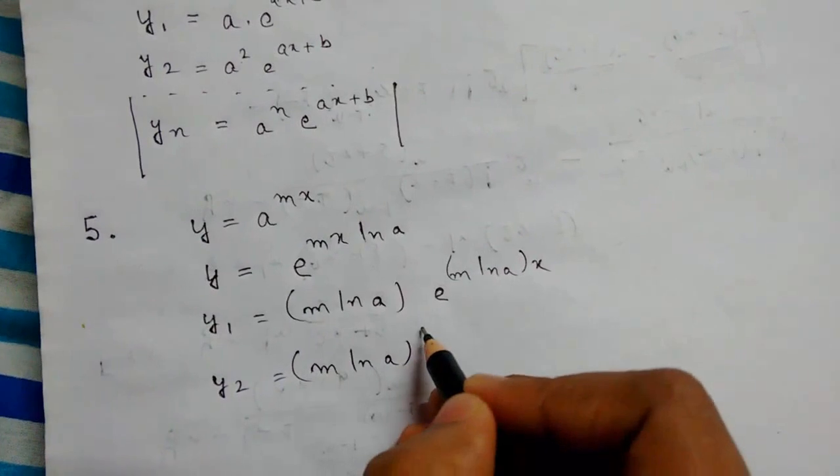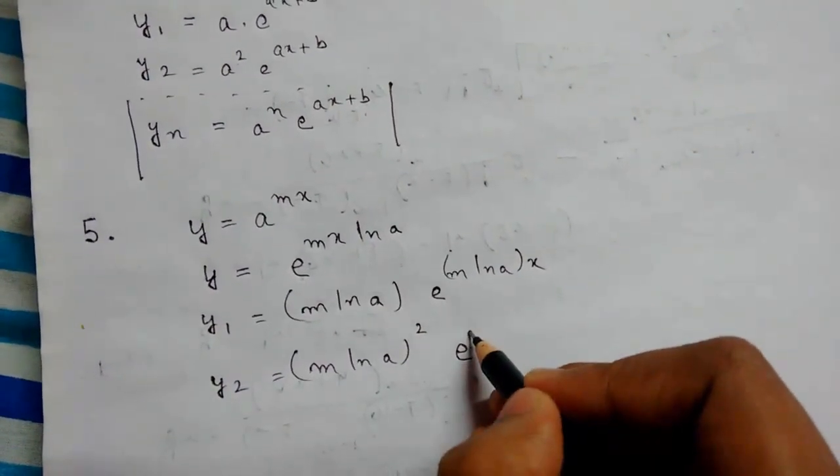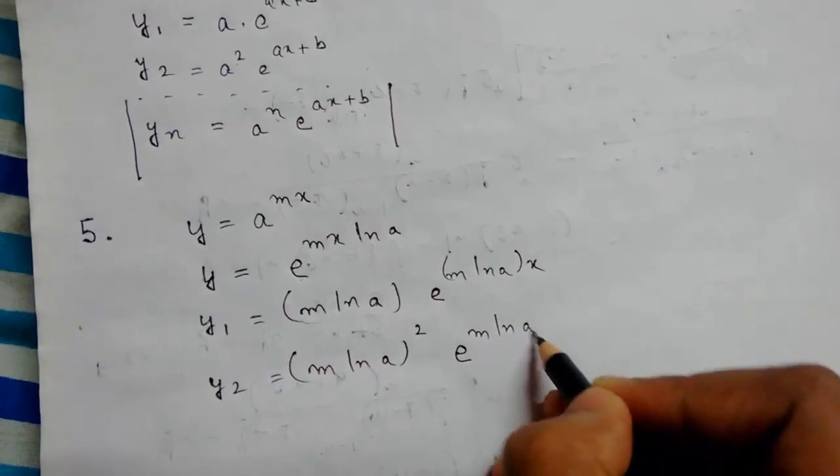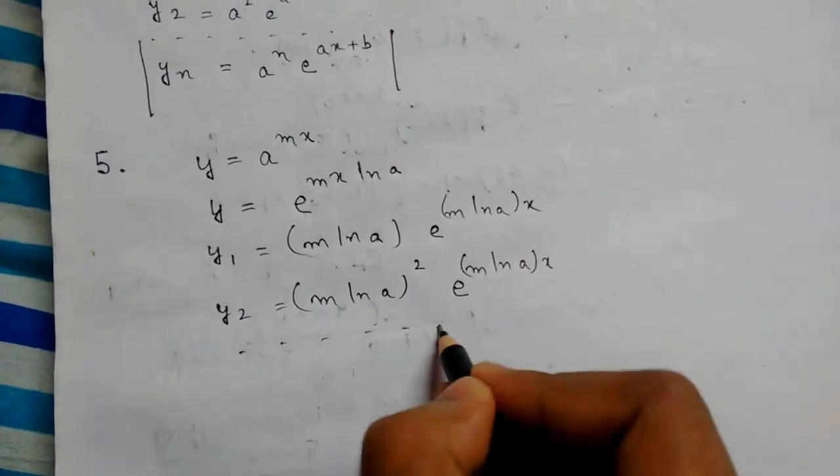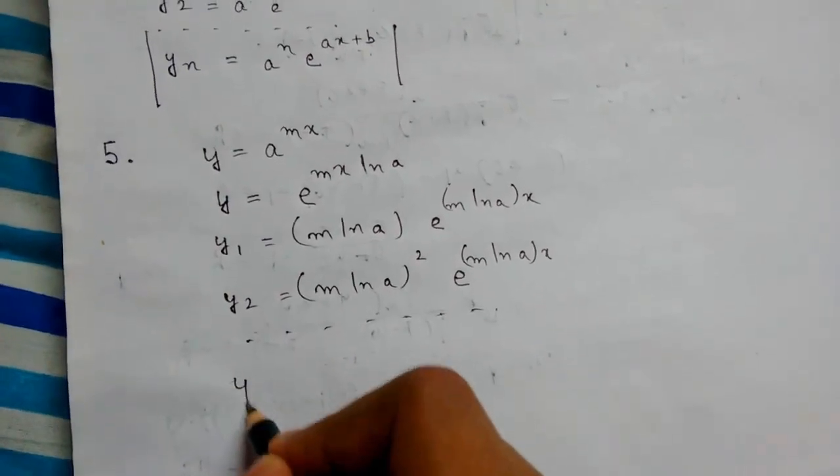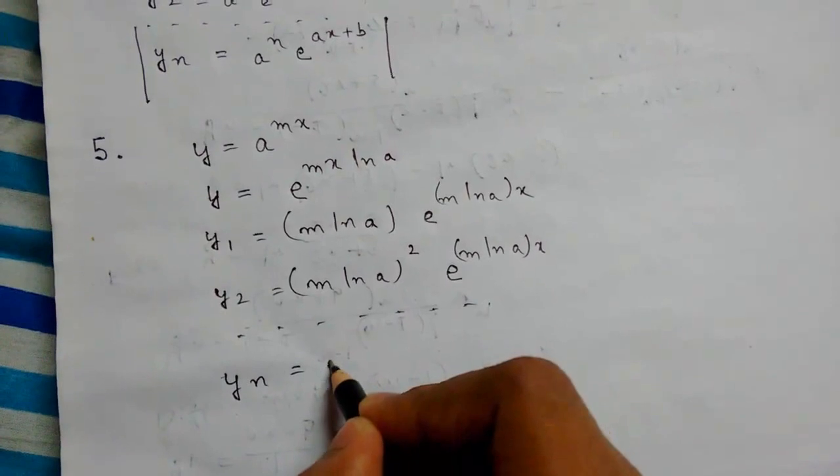Doing this for n times, we can derive the general formula. yn will equal m ln a to the power n, times e to the power m ln a x.